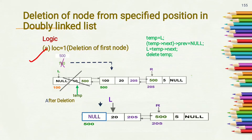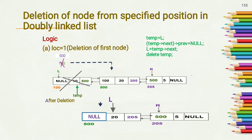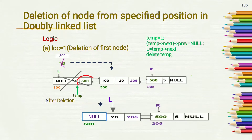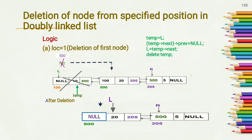The logic explained in deletion of first node from doubly linked list is applied here also. First we have to store the address of the first node into a temporary pointer by writing temp = l. Then we have to update the previous pointer of the next node — the name of this node is temp→next — and in temp→next we want to change the previous pointer to null. So we write temp→next→previous = null.